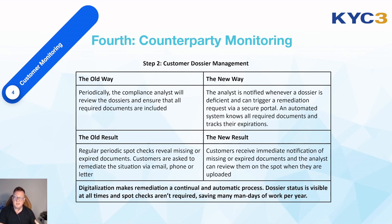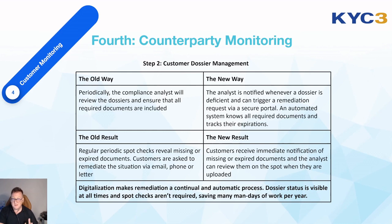The new way is to do this in real time and continually, because all dossiers are managed in an intelligent document management system. The analyst is notified whenever a dossier is deficient — if a document is expired or missing due to a new compliance requirement. The automated system knows all the required documents and tracks their validity. Customers receive immediate and complete notification of missing or expired documents, and the analyst can review them on the spot as soon as they're uploaded. Digitalization makes remediation a continual and automatic process. Your dossier status is visible at all times, spot checks are no longer required, and it saves many days of work per year for a typical customer dossier portfolio.